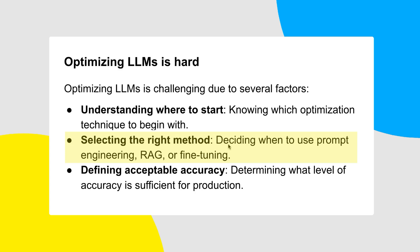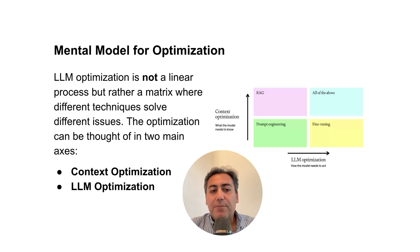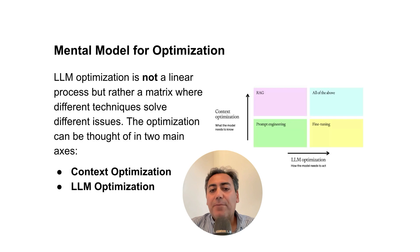How do we decide which method is good for us? That will be explained in this video. Another factor to consider is defining acceptable accuracy — depending on the use case, we have to determine what accuracy level we would expect from the LLMs. There is a great mental model we'll go over. Unlike many people who think it's a linear process where you just apply techniques sequentially, in practice it is not a linear process. We would describe it instead as a matrix.